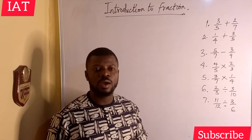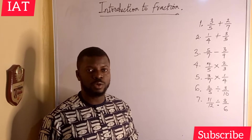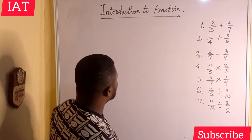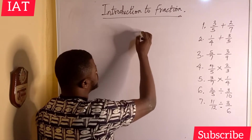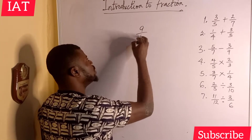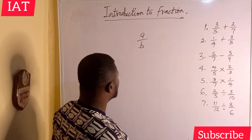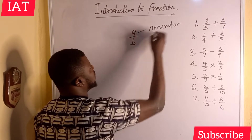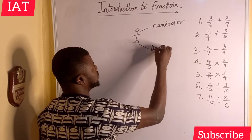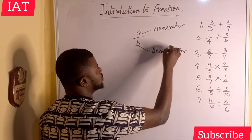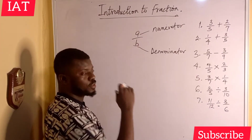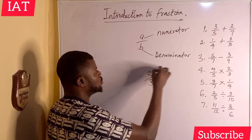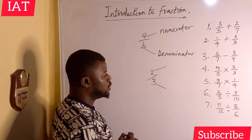In this video we're going to discuss fractions. A fraction is a part of a whole number, or you can define fraction as a part of a set. We can represent a fraction as a numerator dividing a denominator. Whatever you see on top is called the numerator, and whatever is on the bottom is called the denominator. For example, in two over three, two is the numerator and three is the denominator.